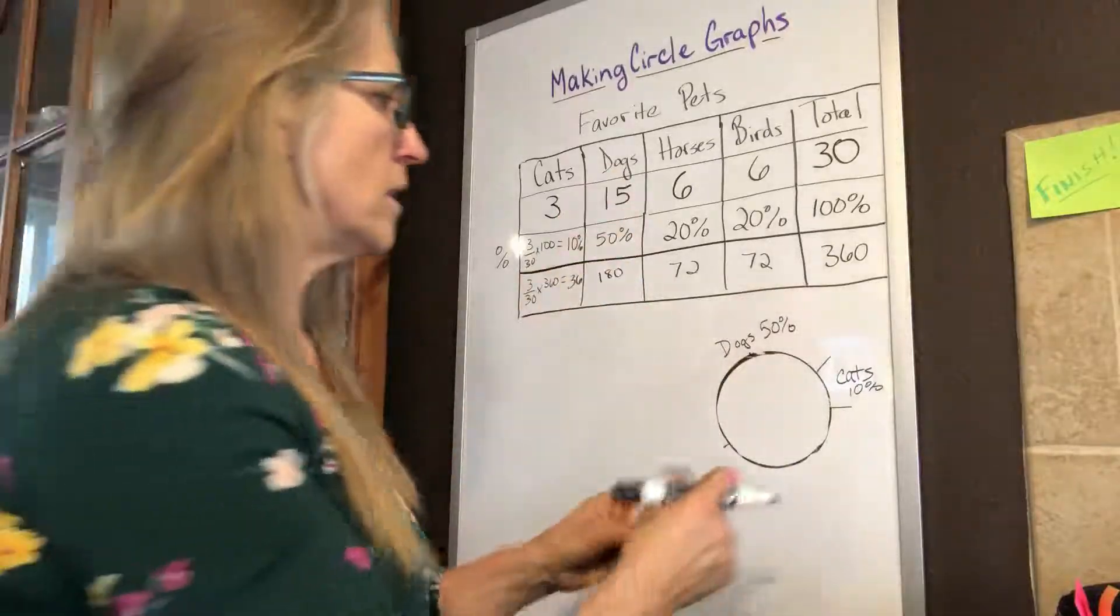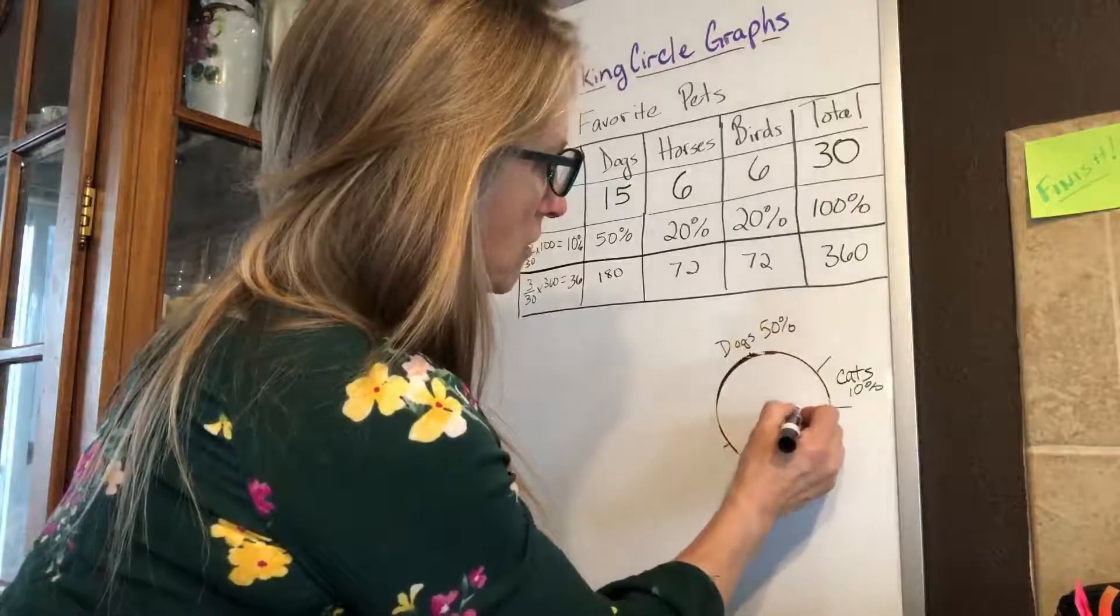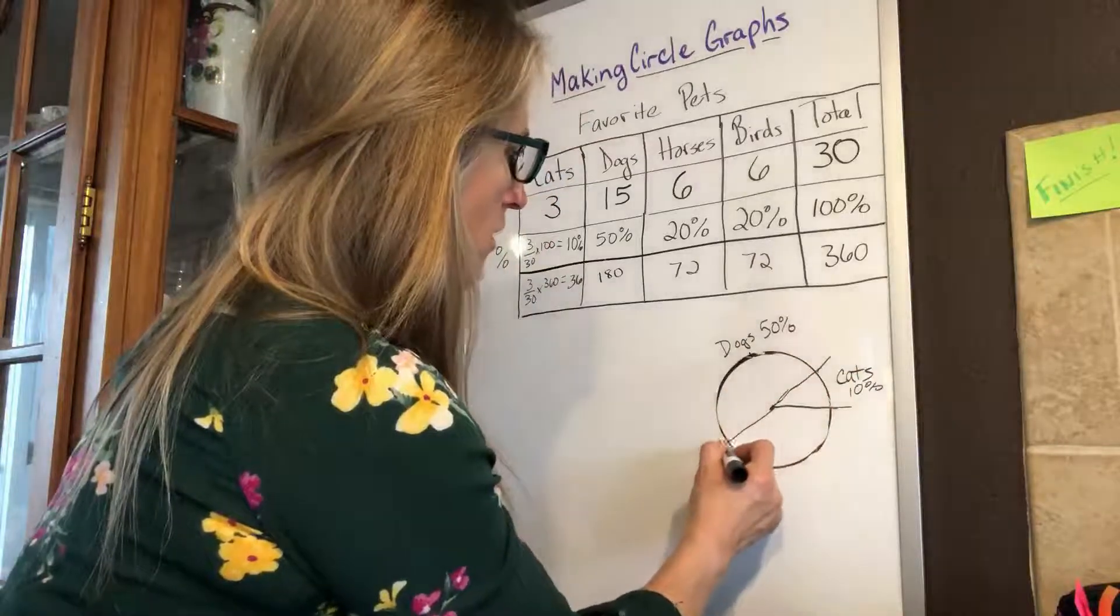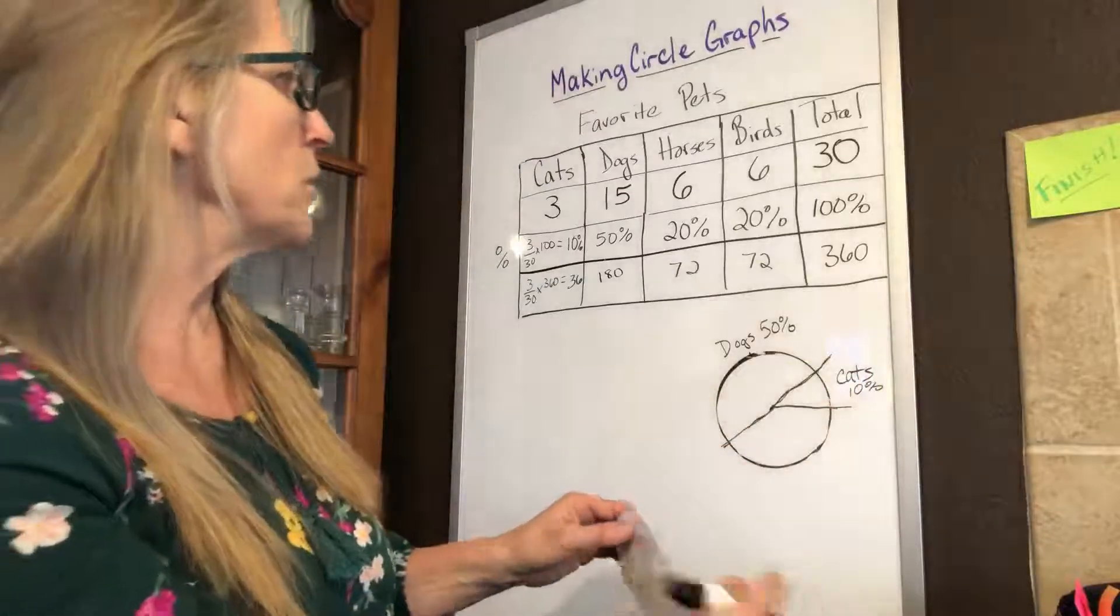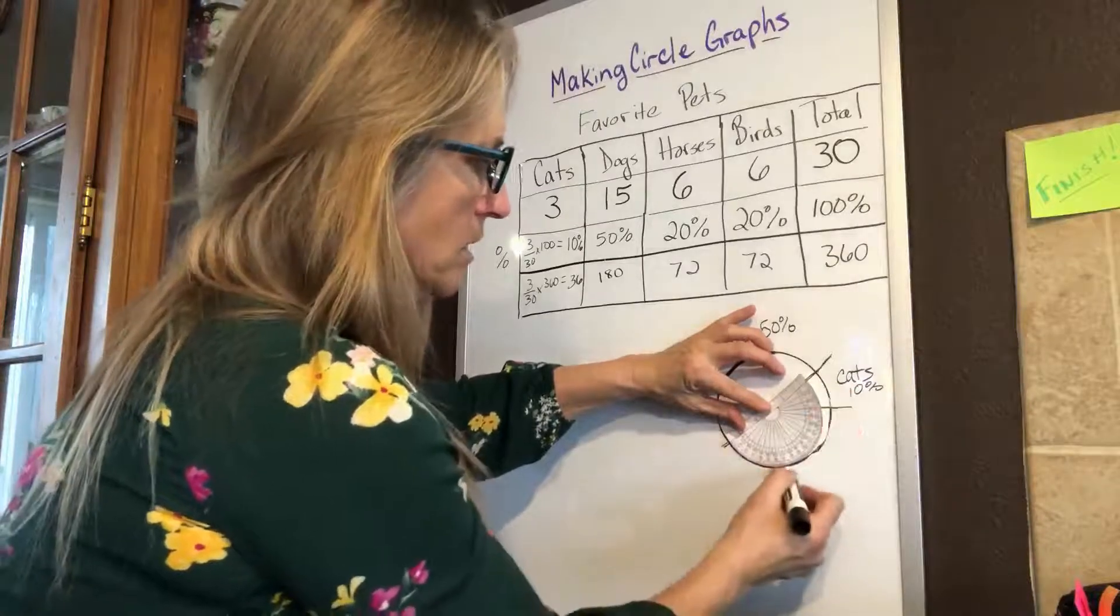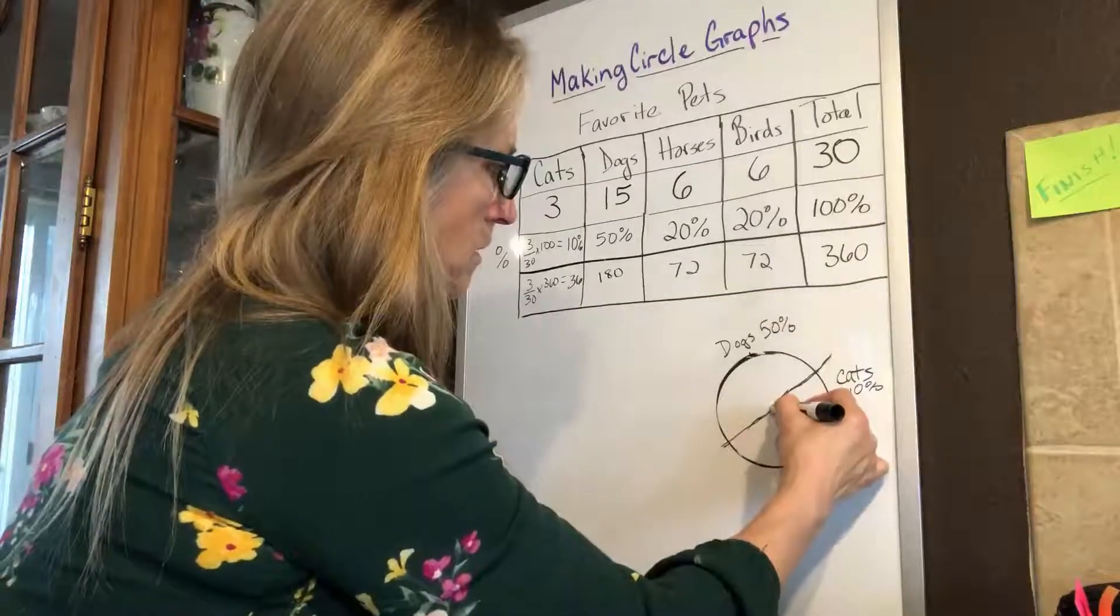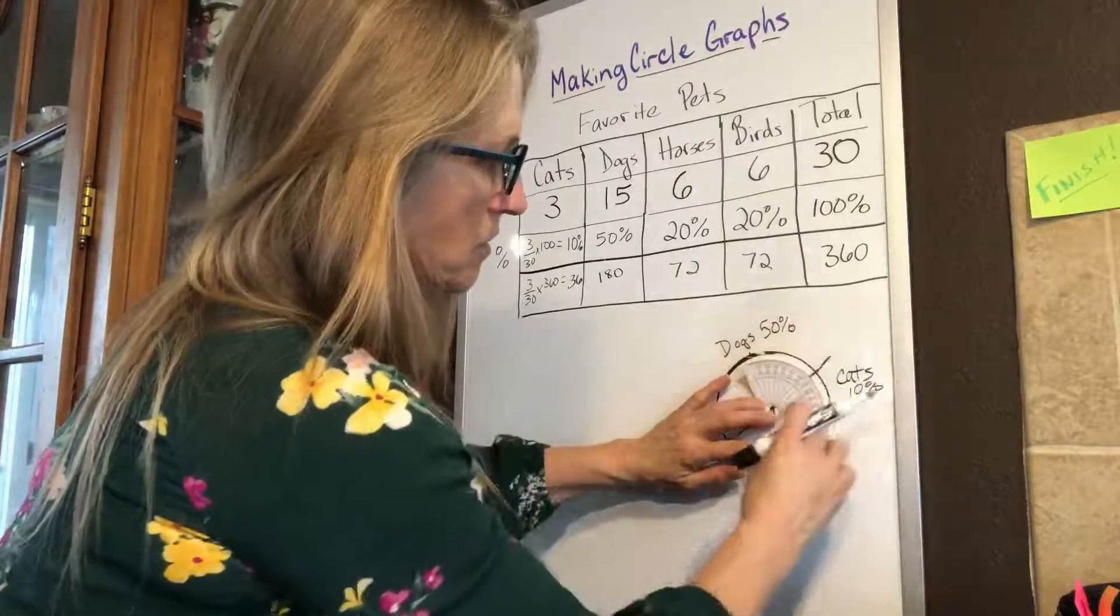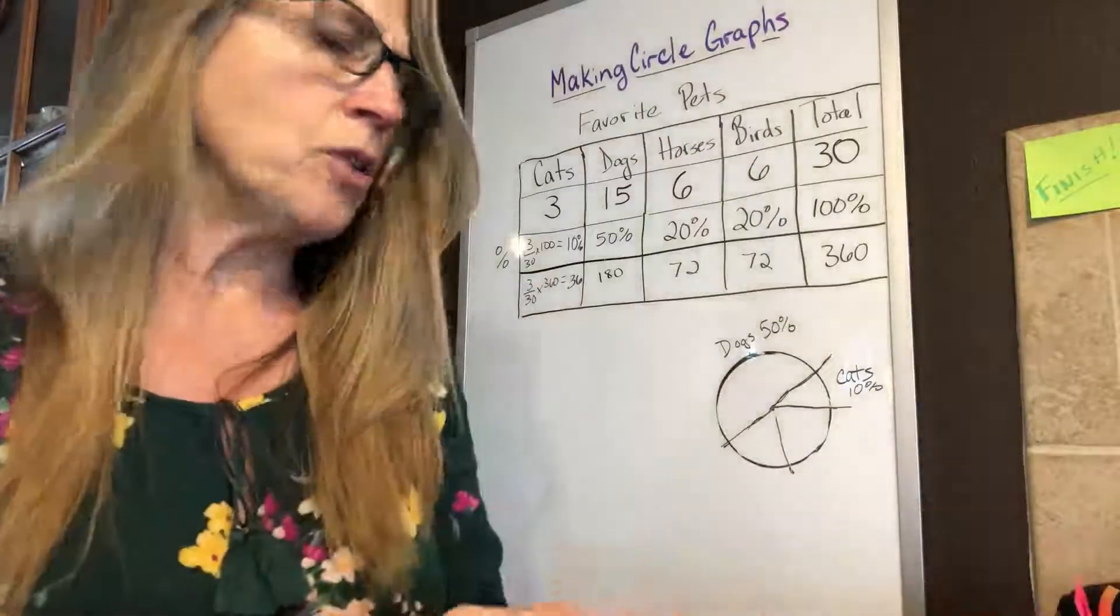Then we have our - let me try to draw our line from the center out. So that's where we start at zero. There's our cats. Here's our dogs. Then our birds, we need 72 degrees. So I could move my protractor around to there and I can go to 72. And then the remainder - draw from my center out - the remainder should also be 72. And it's pretty darn close. This is a bit of a rough drawing.